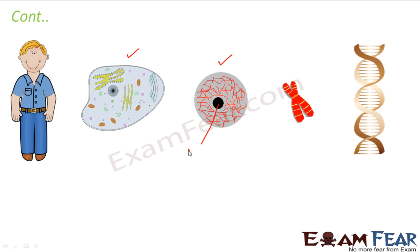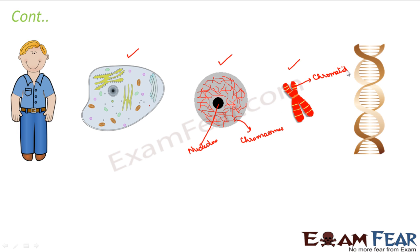If you observe the nucleus closely, it consists of thread-like structures inside it — these are nothing but chromosomes. If we look at these chromosomes more closely, they are made up of two strand-like structures called chromatids. Each strand is a chromatid, and they are joined together. The part which joins the two chromatids to form a chromosome is known as the centromere.